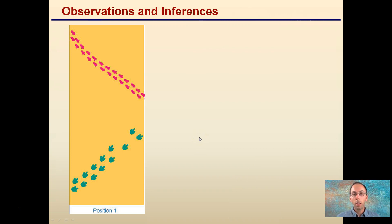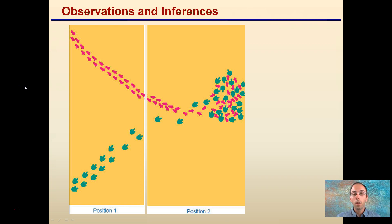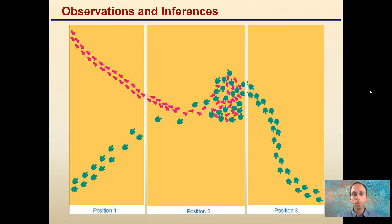Let's go through one last example. I want you to pause the video now and make some observations and some inferences for this particular image. Hopefully you paused the video there and made some observations and inferences. Now I want you to do that same process again with a little bit more information — what observations and inferences can you make from position two? Now do this one last time for position three. You can see how as we gain more information, we're able to make more precise inferences, and also be very careful about making pure observations that aren't influenced by our opinions or biases.